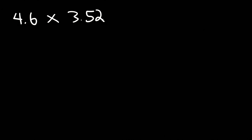The next thing you need to be able to do is round a number when multiplying or dividing. For instance, if we are multiplying 4.6 by 3.52, how can we round our answer to the appropriate number of significant figures? First, perform the calculation — 4.6 times 3.52 gives 16.192 on a calculator.